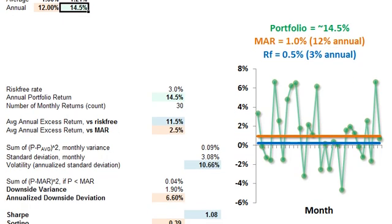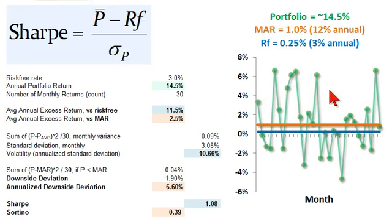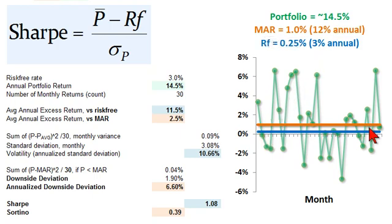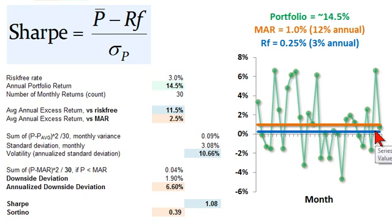Looking at the chart on the right, graphically in green we have the portfolio return — each month annualized, averaging 14.5%. The blue line represents the risk-free rate at 0.25% per month or 3% annually. The orange line is the minimum acceptable return at 1% per month or 12% annually.